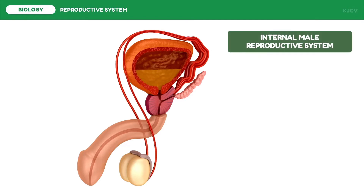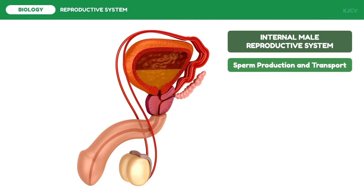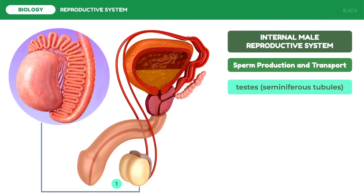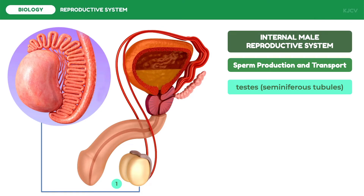Let us first discuss the internal male reproductive system. This functions mainly for sperm production and transport. The main reproductive organ of males is the testes. This organ occurs in pairs. The sperm cells develop inside the testes in a series of tubes known as the seminiferous tubules.